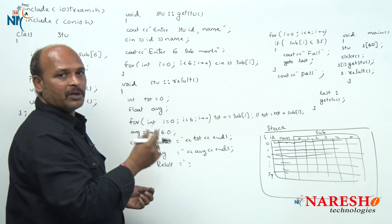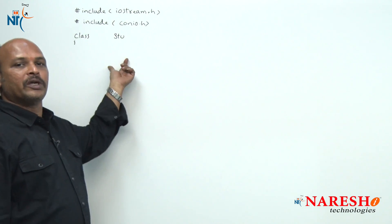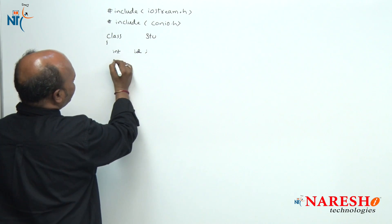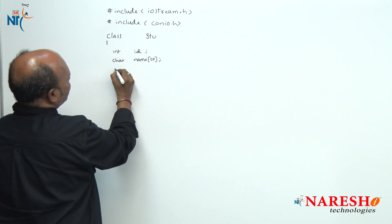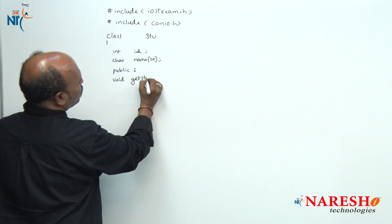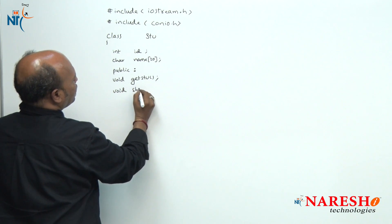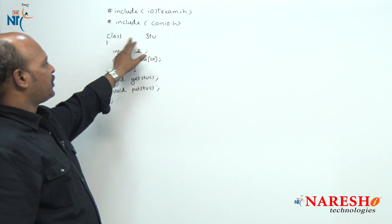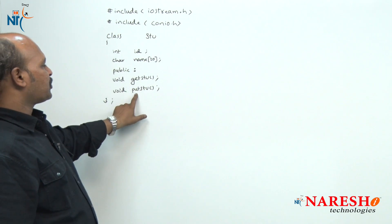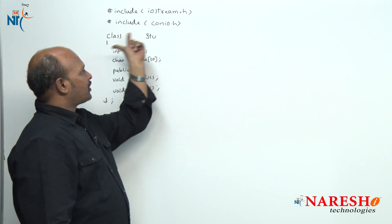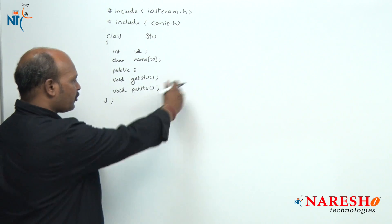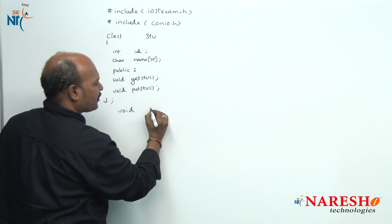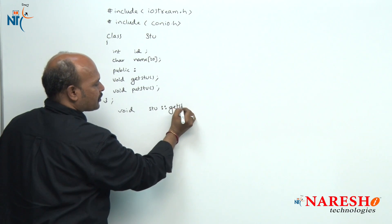Now I am going to implement this and show you in practice. Going through the student class: class student with int id and char name[20] as data members. In the public area: void getStudent and void putStudent as member functions. That is the class definition — class student with id, name data members and getStudent, putStudent member functions.